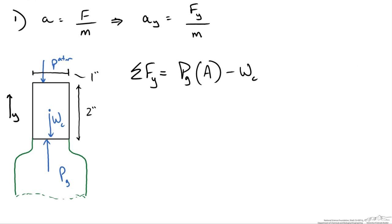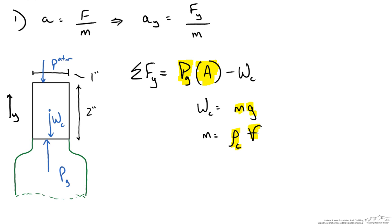This simplifies things greatly. We look at what we know: we are given a gauge pressure inside the bottle of 80 psi, and the diameter is 1 inch so we can calculate the area. We are not given the weight directly, but we can calculate it as mass times gravity, where mass equals density times volume. We are given the cork dimensions and density, so we can calculate mass and therefore weight. Then it is just a matter of calculating the sum of forces and dividing by mass to find the initial acceleration.